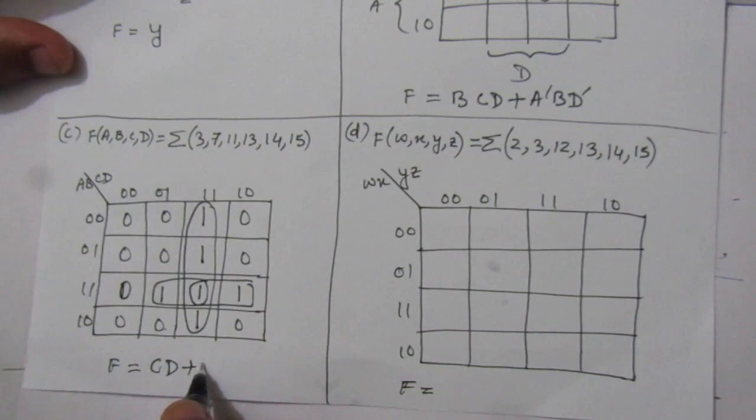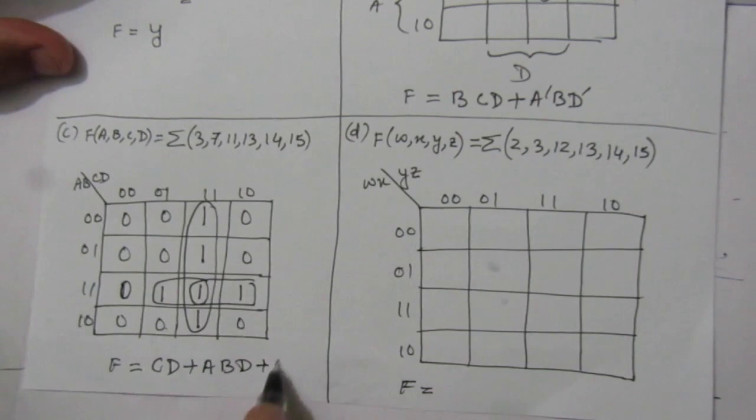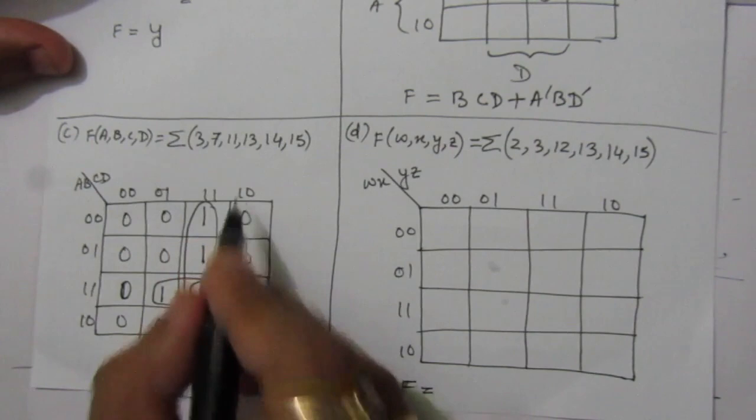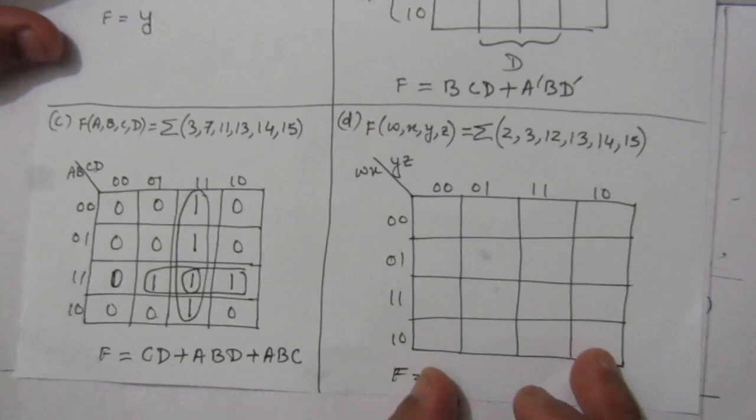For the second grouping, A and B are both one giving AB, then C is cancelled and D is one giving ABD. For the third term we again have AB, and C is one for both cells giving ABC. The simplified boolean expression for problem three is F = CD + ABD + ABC.